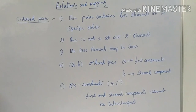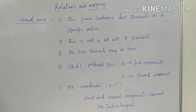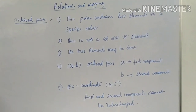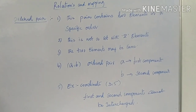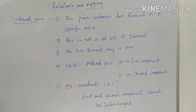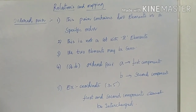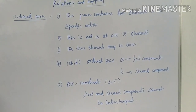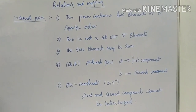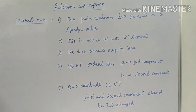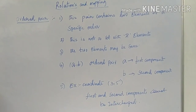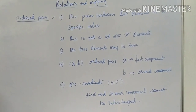Our first chapter is Relations and Mapping. What is a relation? A relation is a relationship between a set of values — the relation between X and Y as ordered pairs. The X value is called the domain and the Y value is called the range.